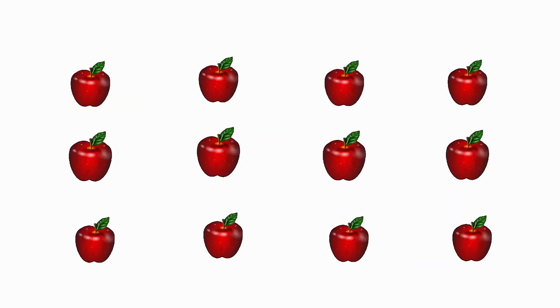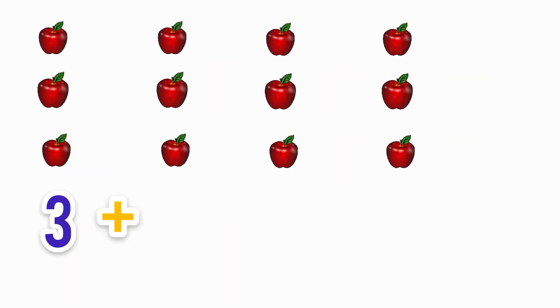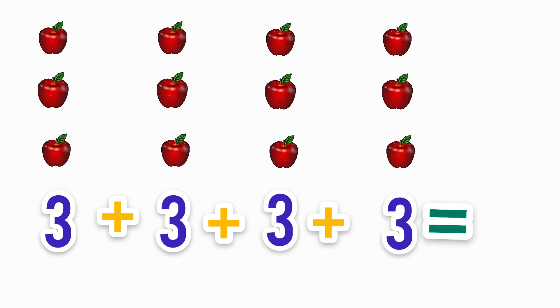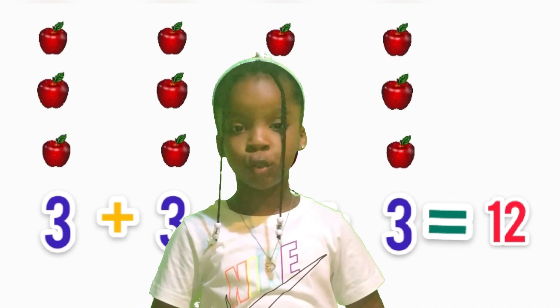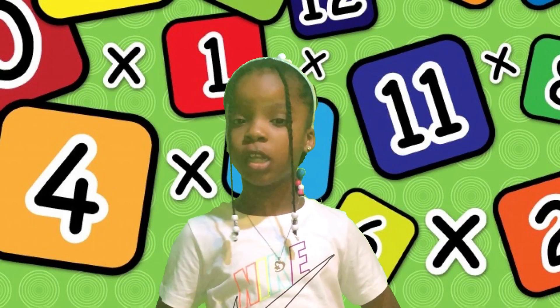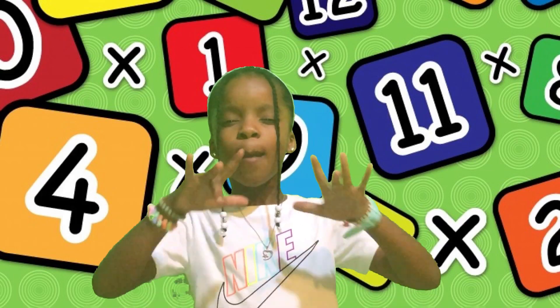Let us look at this picture. Isn't it easy to identify that there are three apples? But let's say we have four groups of three apples. How many do you think there are? We could say three plus three plus three plus three equals twelve. But having to go that route will take much longer.